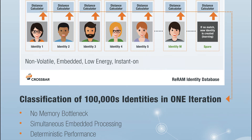When there's no match, for example, you can also do some learning. If you have a new face that is not in the database, you can store this new face here, and the next time you run the face recognition, it will be recognized. That's the beauty of having a non-volatile memory to accelerate the neural network for these applications like face recognition.